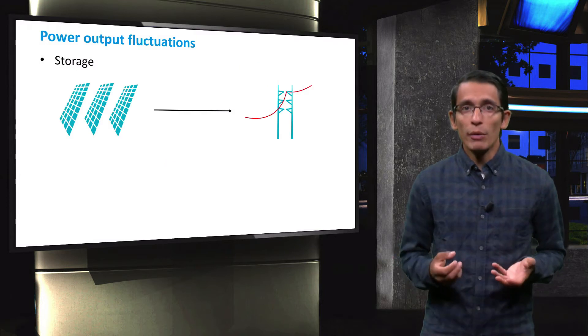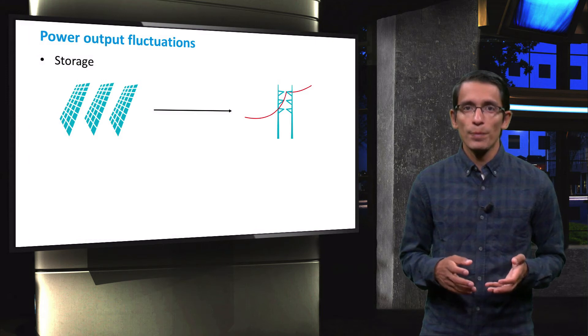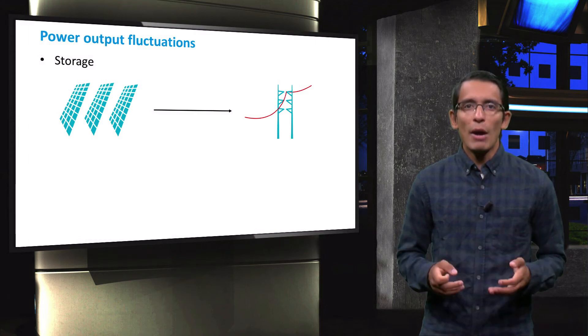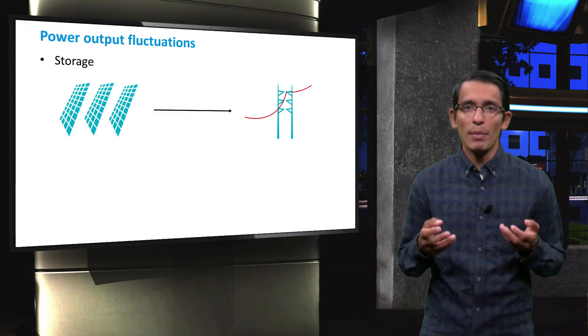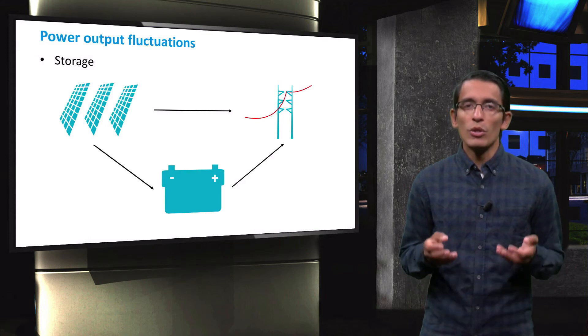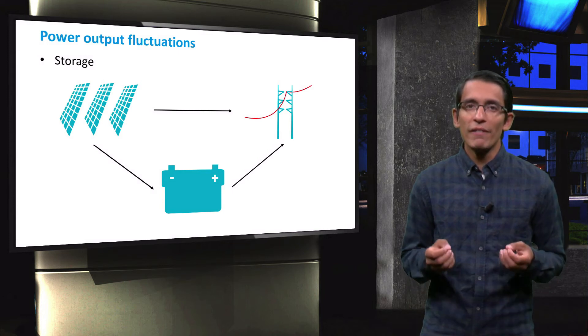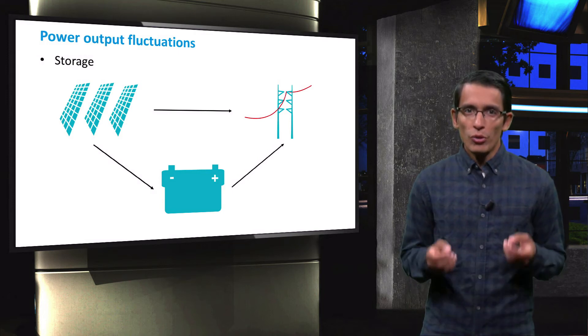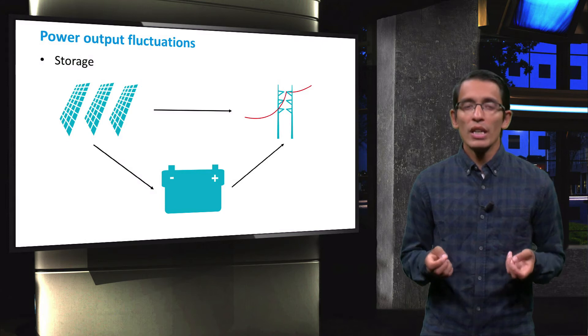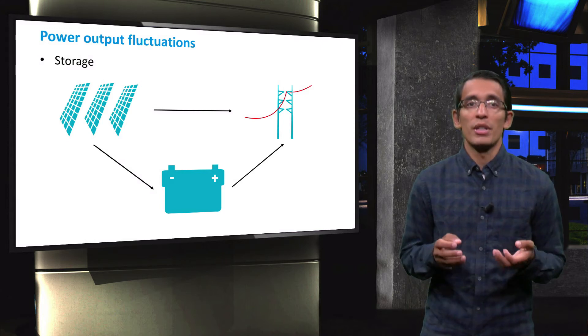Another way of coping with power fluctuations is the installation of storage facilities. In this case, when the power output of the PV system is higher than the demand, the excess can be stored and then reused when necessary. Battery systems are characterized by very fast response time. With the dropping price of lithium-ion technology, this solution is becoming more and more tenable.